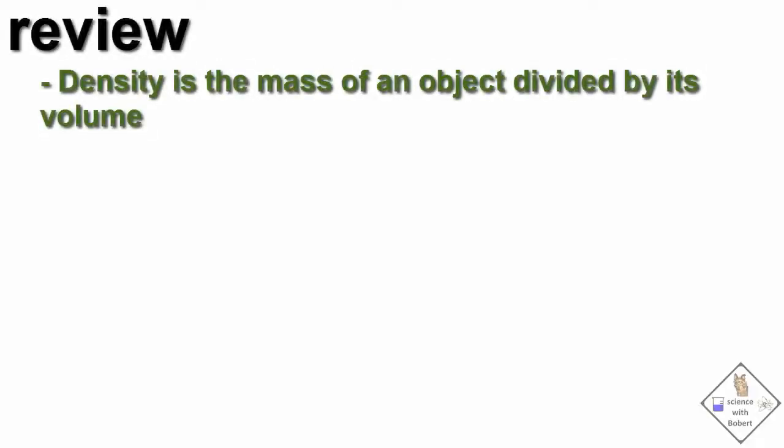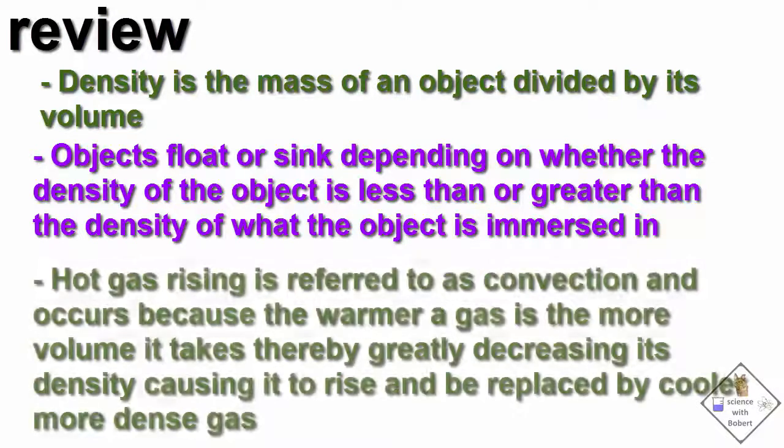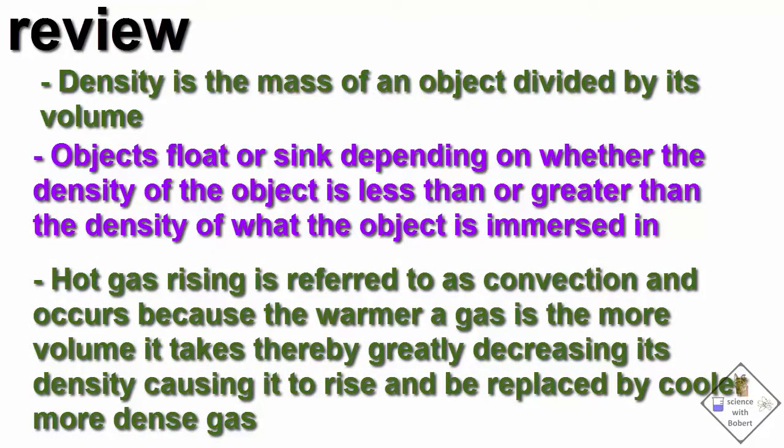Let's review. Density is the mass of an object divided by its volume. Objects float or sink depending on whether the density of the object is less than or greater than the density of what the object is immersed in. Hot gas rising is referred to as convection and occurs because the warmer a gas is, the more volume it takes up, thereby greatly decreasing its density causing it to rise and be replaced by cooler, more dense gas.